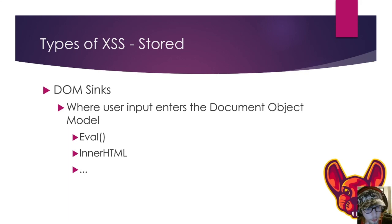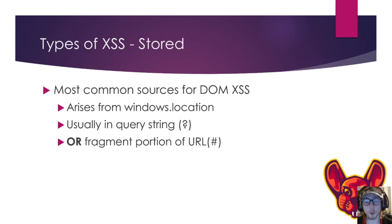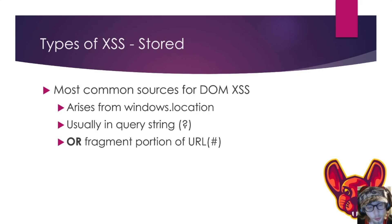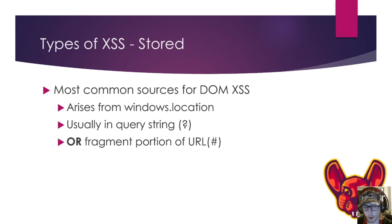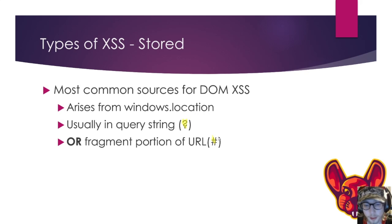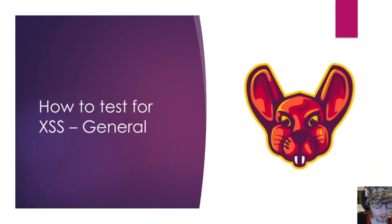DOM sinks include 'eval', 'innerHTML', and many more functions — I highly advise you to look them all up. The most common sources of DOM XSS events are 'window.location' — and all of this is based on PortSwigger research, which I highly advise you to check out, as it goes much deeper than this video can. DOM XSS from 'window.location' usually arises from the query string or fragment portion of the URL — that's the question mark and the pound sign — which we'll look at in more detail later.